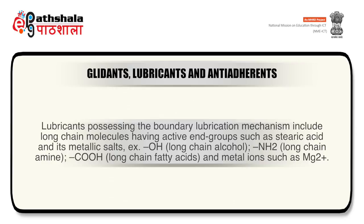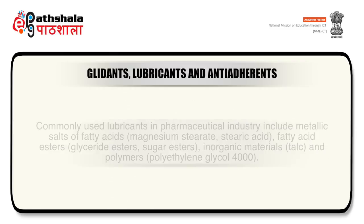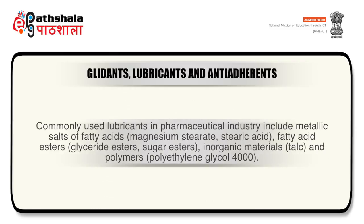In boundary lubrication, the lubricant forms layers or films between surfaces or at interfaces to reduce friction, penetrating itself into the asperities. Lubricants possessing the boundary lubrication mechanism include long chain molecules having active end groups such as stearic acid and its metallic salts, long chain alcohols, long chain amines, long chain fatty acids, and metal ions such as magnesium ions. Commonly used lubricants include metallic salts of fatty acids like magnesium stearate, stearic acid, fatty acid esters, glyceride esters, sugar esters, inorganic materials such as talc, and polymers such as polyethylene glycol 4000.